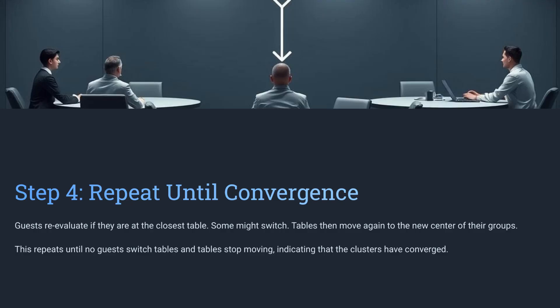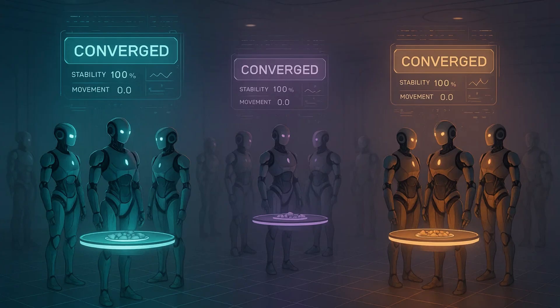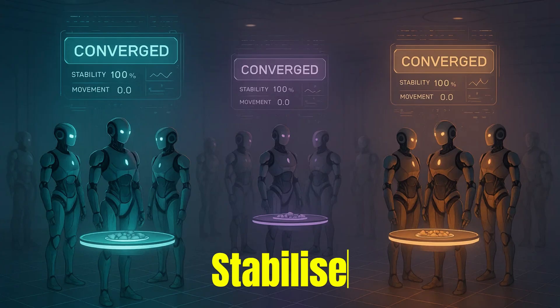Step 4: Repeat until convergence. Guests reevaluate if they're at the closest table and might switch groups. Afterward, tables are moved again to the center of their new groups. This process repeats until no one switches tables and the tables stop moving, indicating that the clusters have stabilized. While k-means has its limits with more complex shapes or unevenly sized groups, it's still a great go-to tool for many clustering tasks. If you're looking for a quick and effective way to explore your data, k-means is a solid choice.